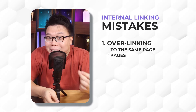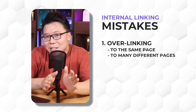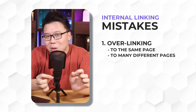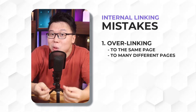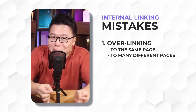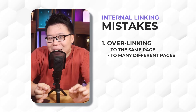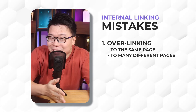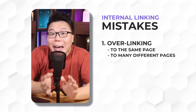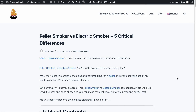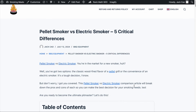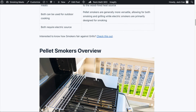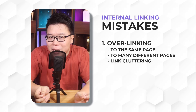Over linking can also mean linking too many times to different pages. Adding an excessive number of links to various pages can overwhelm your site visitors, and search engines may struggle to determine which pages are more important, hence diminishing the value of each link. So you should prioritize relevance and user experience — only link to relevant pages that enhance the visitor's understanding of the topic. The last thing about over linking is link cluttering: having too many links crammed together in a short introduction. You want to spread links throughout the rest of the page, but make sure it is natural.